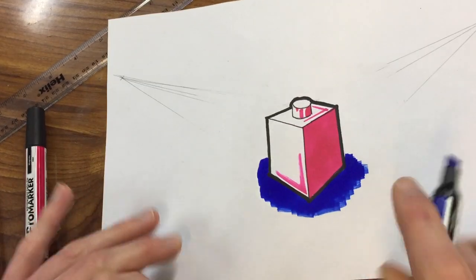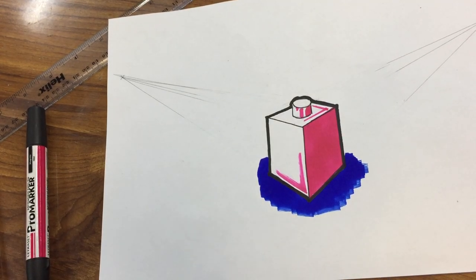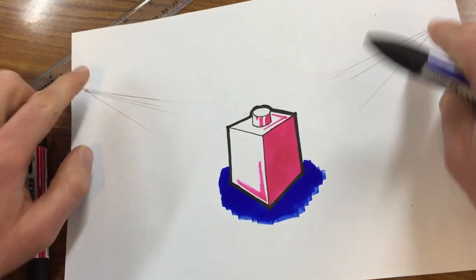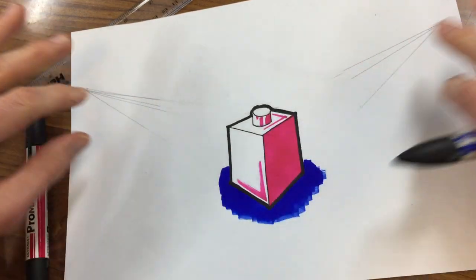And as you can see, using those two vanishing points to begin, having the vanish—the guidelines disappearing towards it, it looks like it's shrinking, looks like quite a realistic object. Okay, so give that a go.